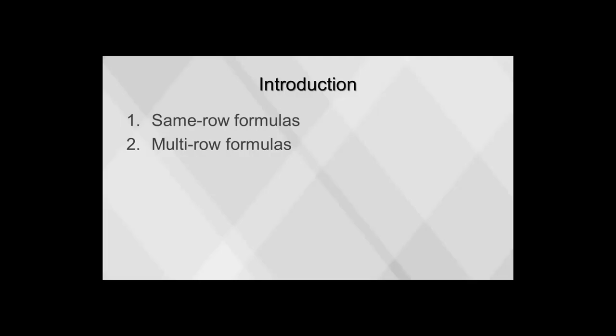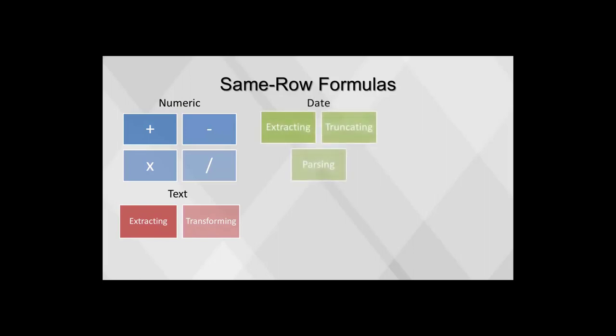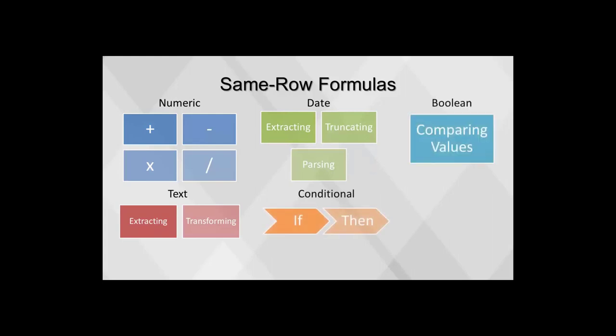This video will cover two types of formulas: same-row and multi-row. A commonly used method of data preparation is using existing fields to create new variables. Examples include adding, subtracting, multiplying, dividing, or applying another mathematical function to a numeric field; extracting and transforming substrings from a text field; extracting, truncating, and parsing date parts from a date field; conditional statements using if-then and binning to create new variables; and comparing values of two different fields to create a Boolean variable.